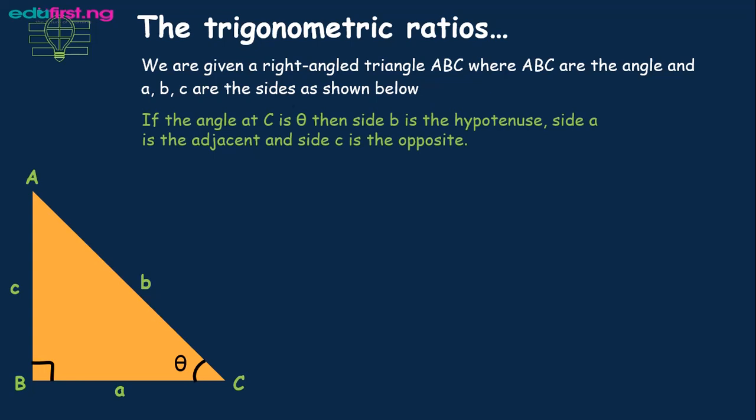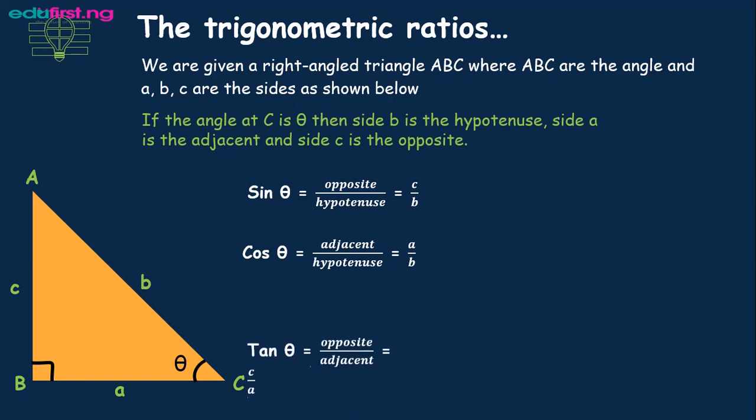SOHCAHTOA: SOH stands for sine theta, which is equal to opposite over hypotenuse. CAH: cos theta is equal to adjacent over hypotenuse. TOA: tan theta is equal to opposite over adjacent.